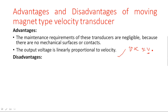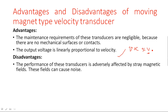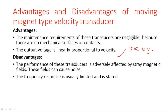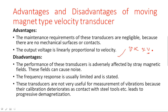Disadvantages: the performance of these transducers is adversely affected by stray magnetic fields, which can cause noise. Any nearby magnetic interference will cause noise in the output. The frequency response is usually limited. These transducers are not very useful for measurement of vibrations because their calibration deteriorates — contact with steel, tools, etc., leads to progressive demagnetization.